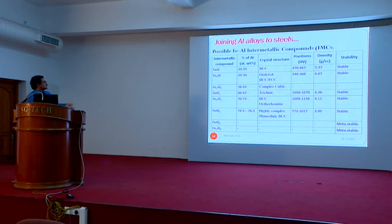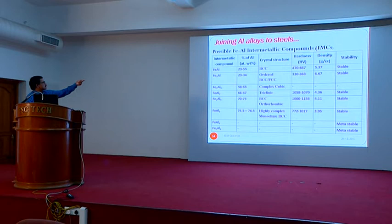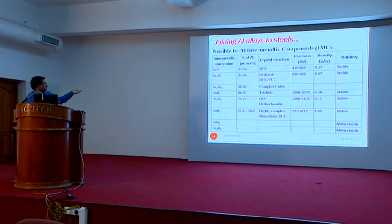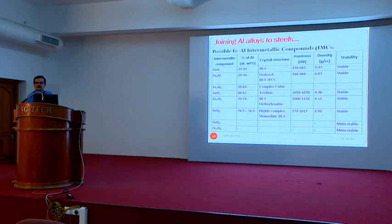The different stable and unstable IMCs have different properties and weight percentages of aluminum. For iron-rich IMCs the density is 5.37 and hardness around HV 470; for aluminum-rich IMCs the density comes to 3.95 and hardness nearly HV 1000. There is a progressive increase in hardness and brittleness for aluminum-rich IMCs, with very poor strength. So when there is thick formation of aluminum-rich IMCs, the strength of the joints will be very poor.